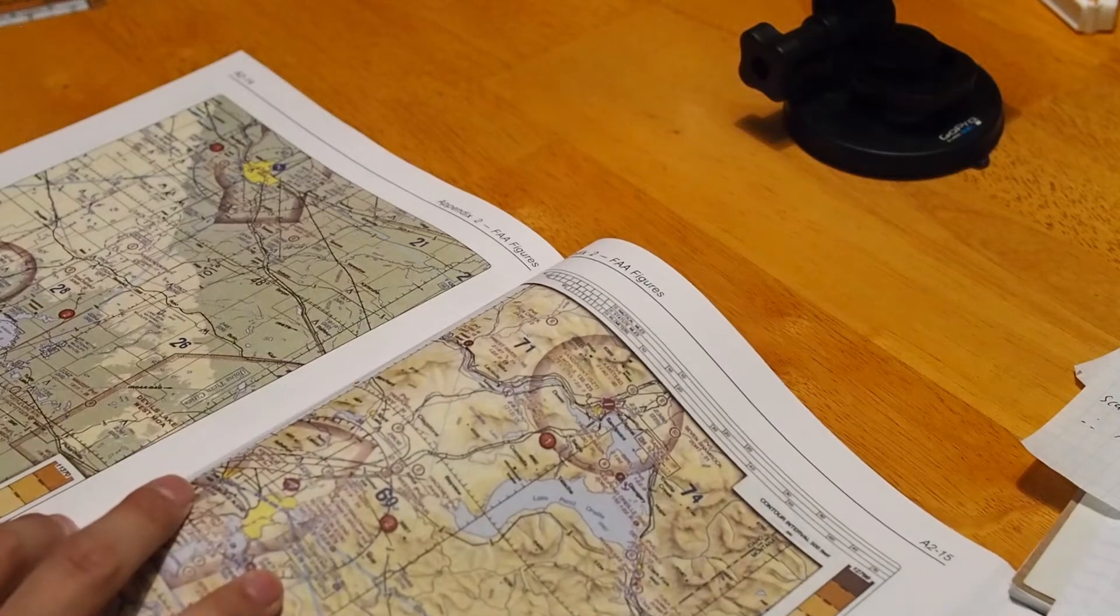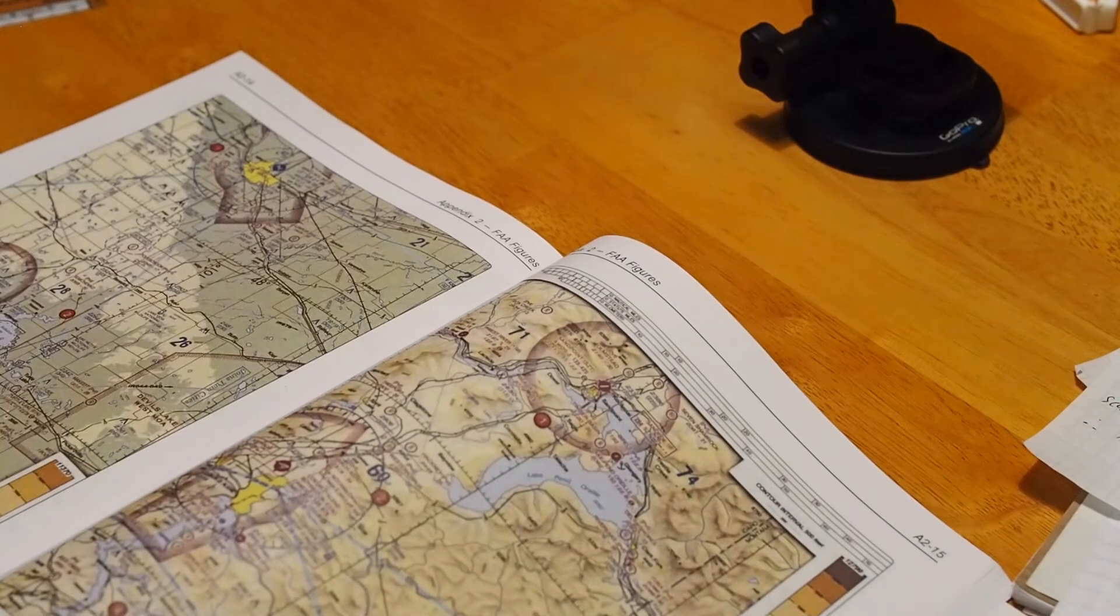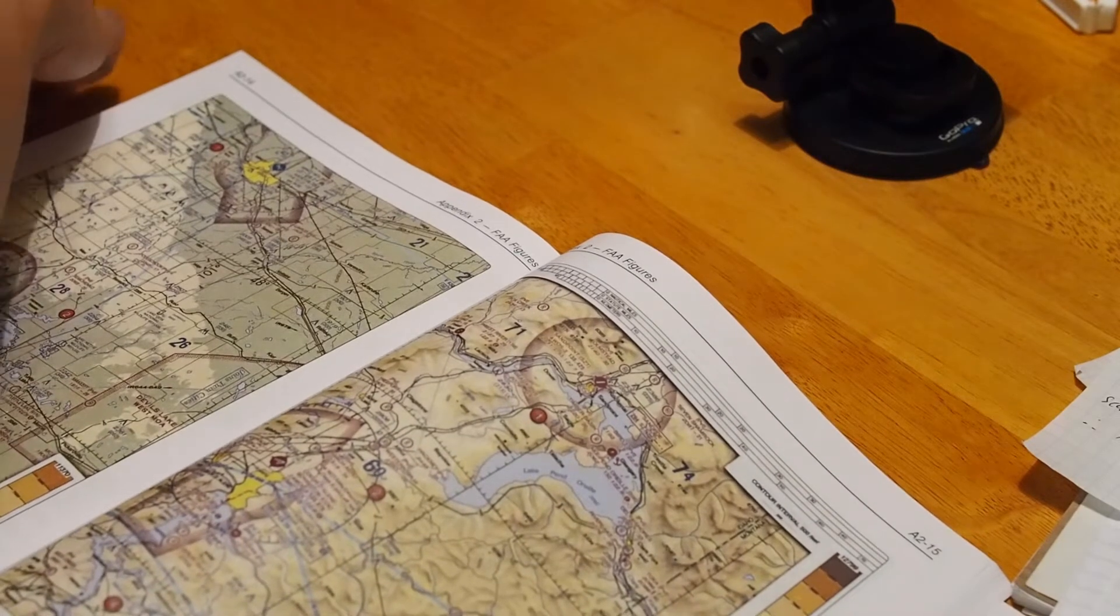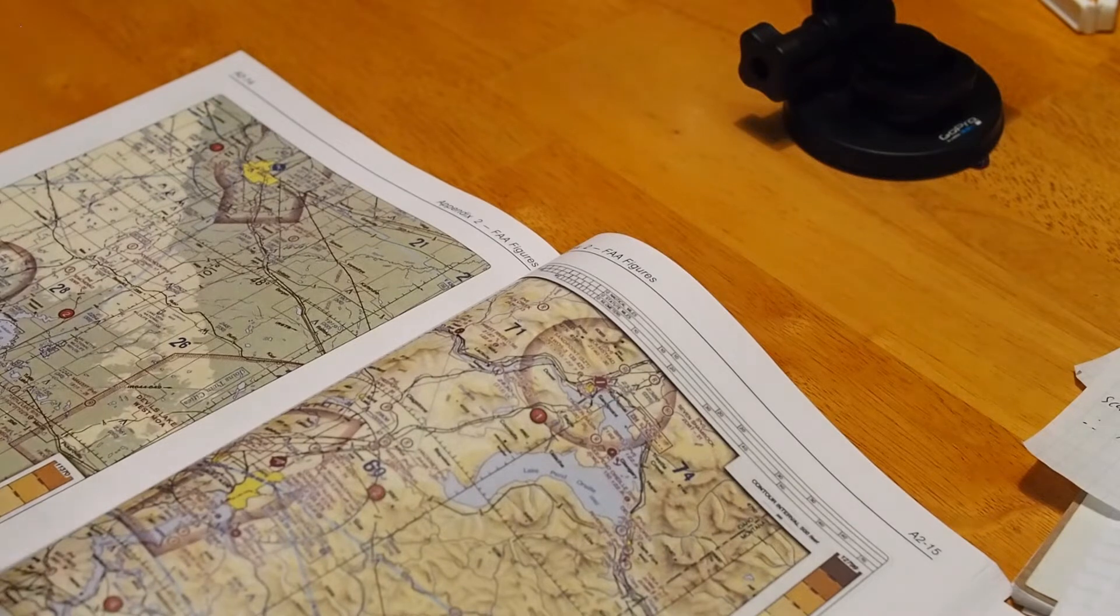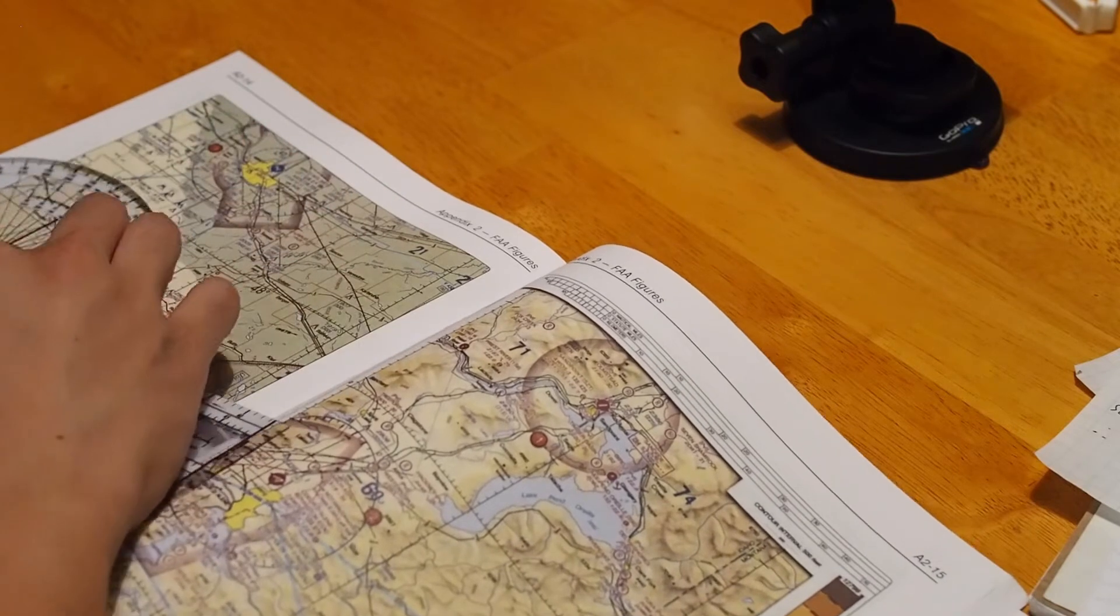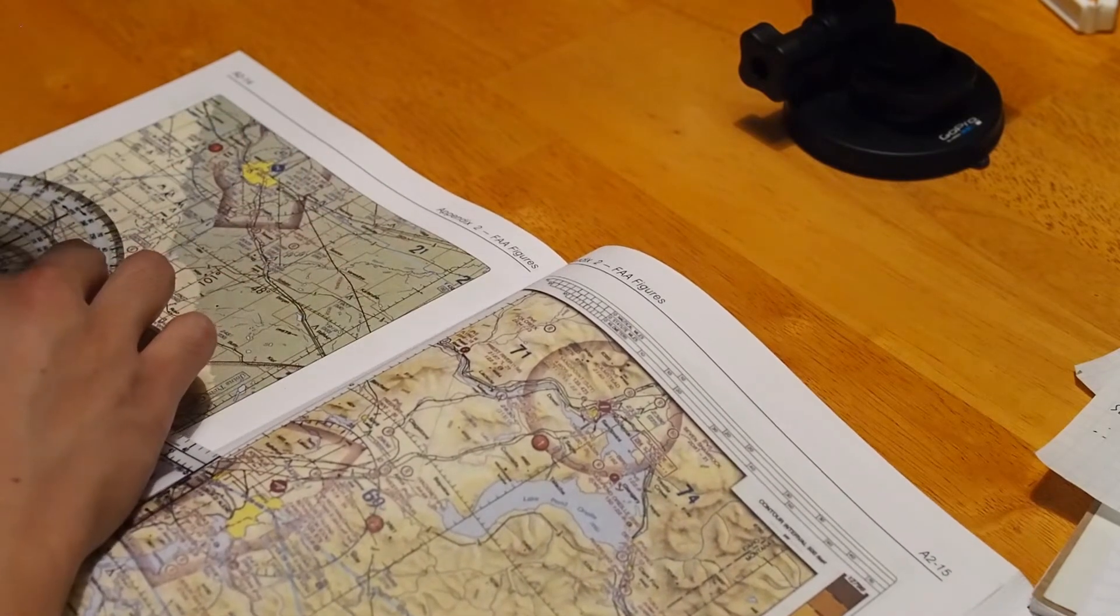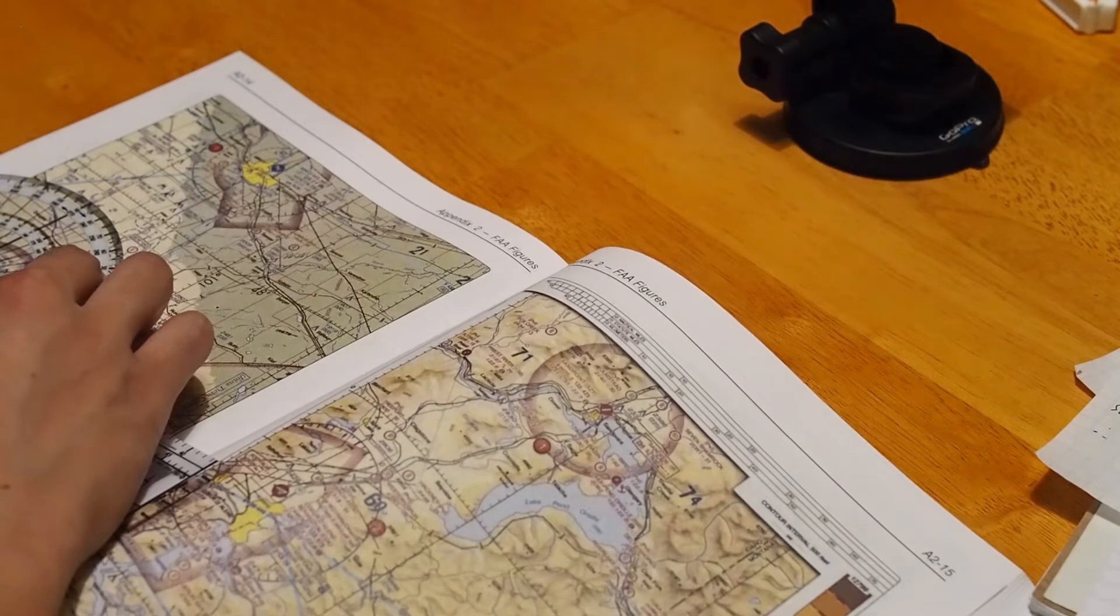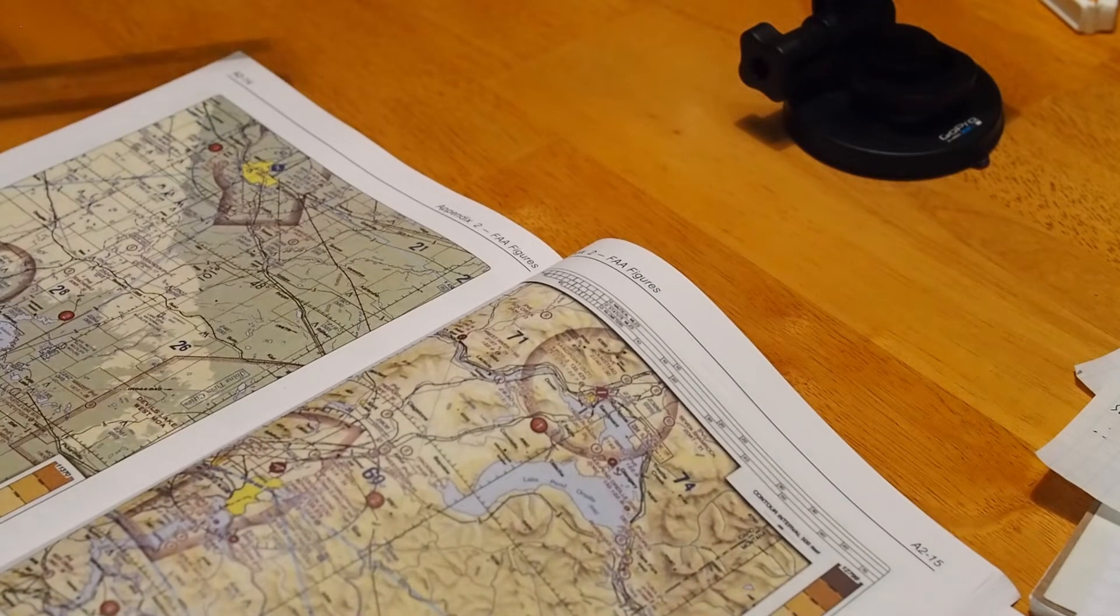First of all, we need to find our true course. Now I have taken the liberty and gotten ahead and drawn everything I need to draw ahead of time, just to expedite things a little bit. Basically, you draw a line from point A to point B. Take your plotter and you just line it up, find your true course. And in this case, your true course ends up being around 012.